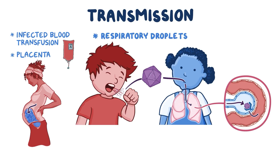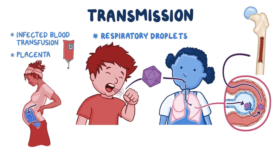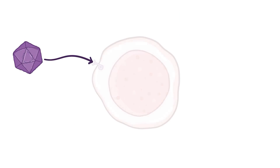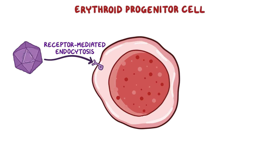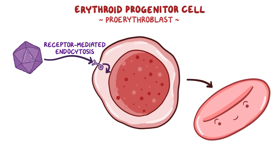Instead, it keeps traveling through cells and into the circulatory system until it reaches the bone marrow, where red blood cells are made — a process called erythropoiesis. Once there, parvovirus B19 uses receptor-mediated endocytosis to enter erythroid progenitor cells, also called proerythroblasts, the early cells that eventually become red blood cells. It then uses these cells' DNA replication machinery in the nucleus to replicate its DNA and assemble new copies of the virus.